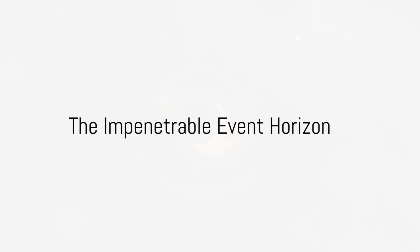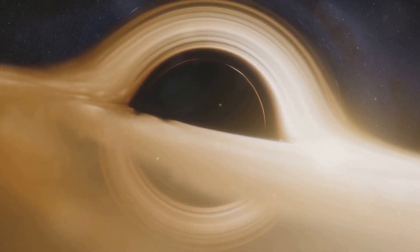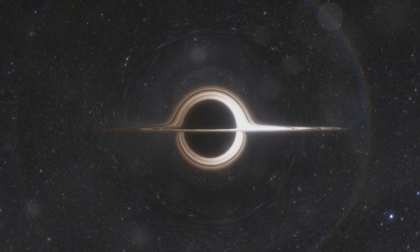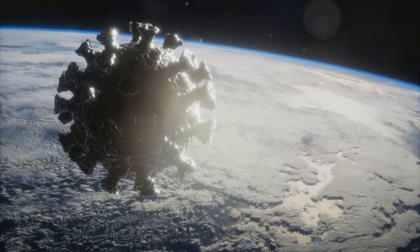But the singularity itself isn't what makes a black hole so powerful. It's the region surrounding it, where gravity warps space-time to an extreme degree. This region is the event horizon. Imagine a boundary in space—cross this boundary and there's no turning back. Once you cross the event horizon, even light cannot escape.